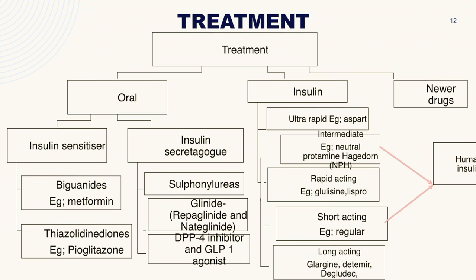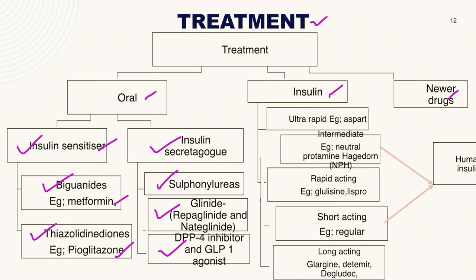Treatment of diabetes can be classified into oral drugs, insulin, and new drugs. Oral drugs are further classified into insulin sensitizers and insulin secretagogues. Insulin sensitizers — which increase insulin sensitivity or decrease insulin resistance — include biguanides such as metformin, and thiazolidinediones such as pioglitazone. Insulin secretagogues include sulfonylureas, glinides such as repaglinide and nateglinide, DPP-4 inhibitors, and GLP-1 agonists.